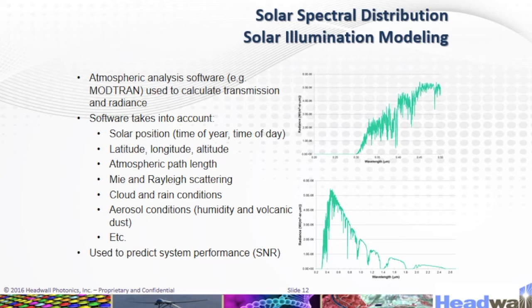System performance modeling is helpful in determining which system to buy and what the limits of operating conditions are. For example, you cannot fly too fast because the sensor requires a minimum integration time for sufficient signal, especially when ground reflectance is low. MODTRAN is by far the most commonly used program to generate models of radiance based on numerous atmospheric conditions, time, location, etc. Headwall has models of the systems we sell, from full optics to focal plane output, with very good accuracy compared to measured results. We can provide models of how our system will perform under different flying conditions.